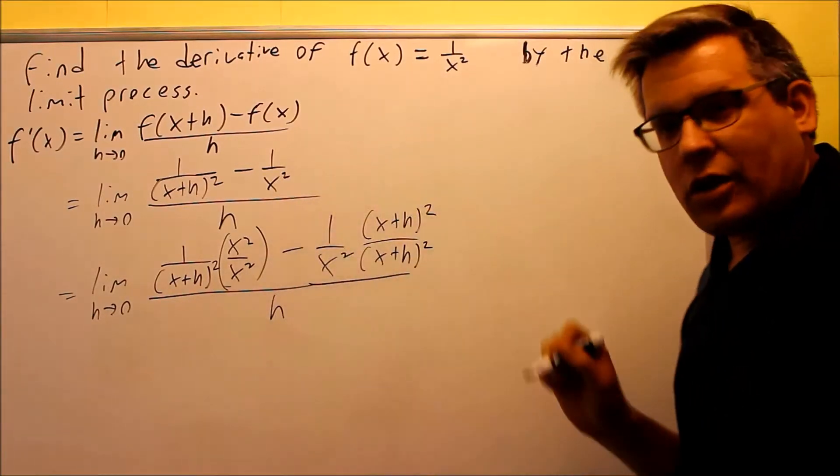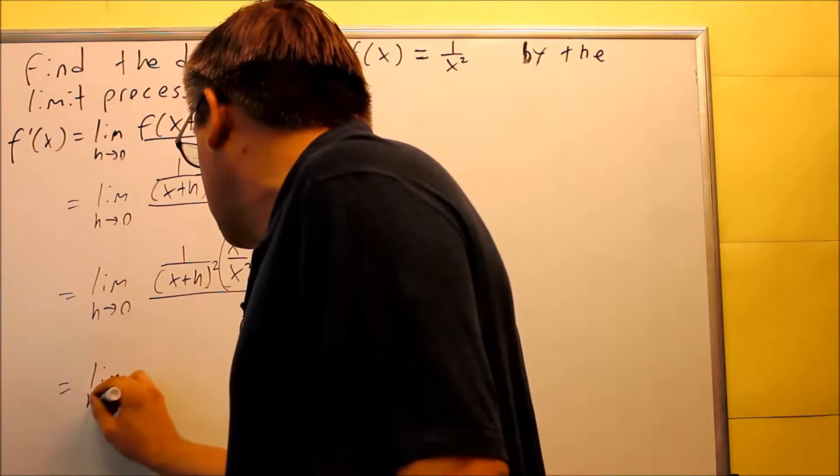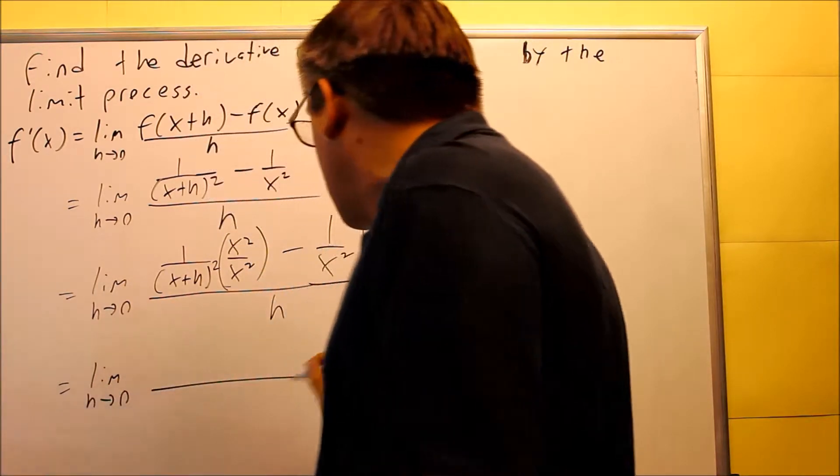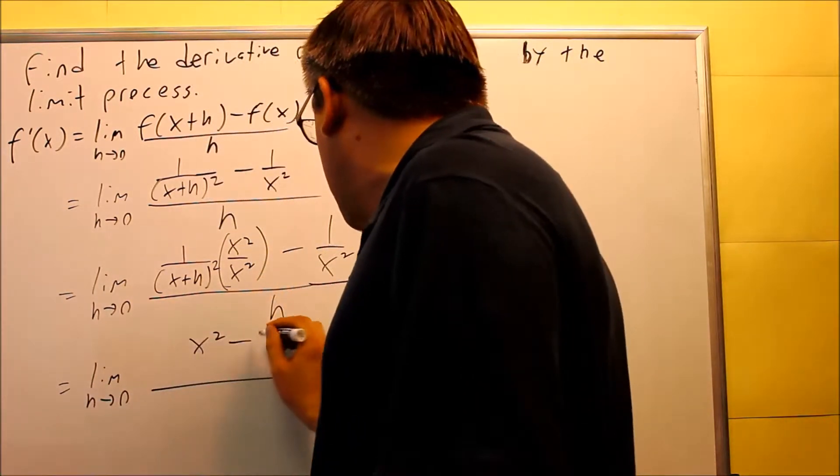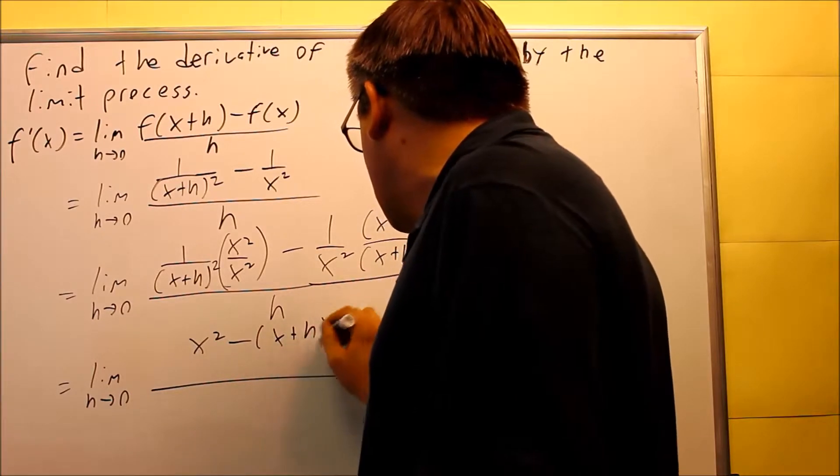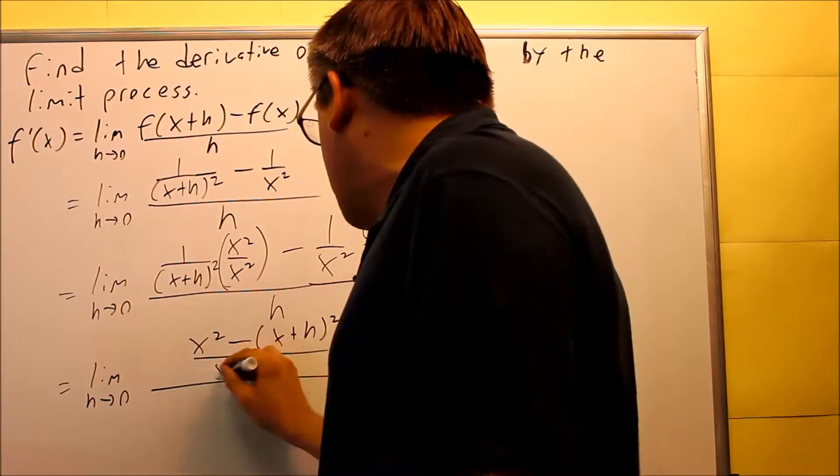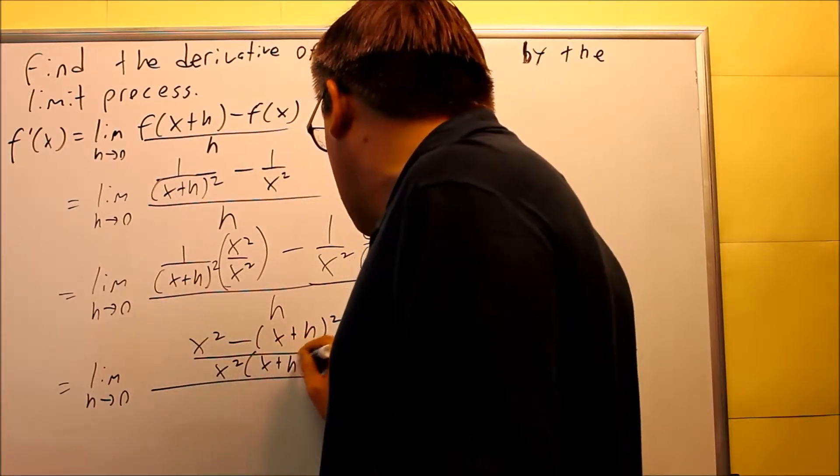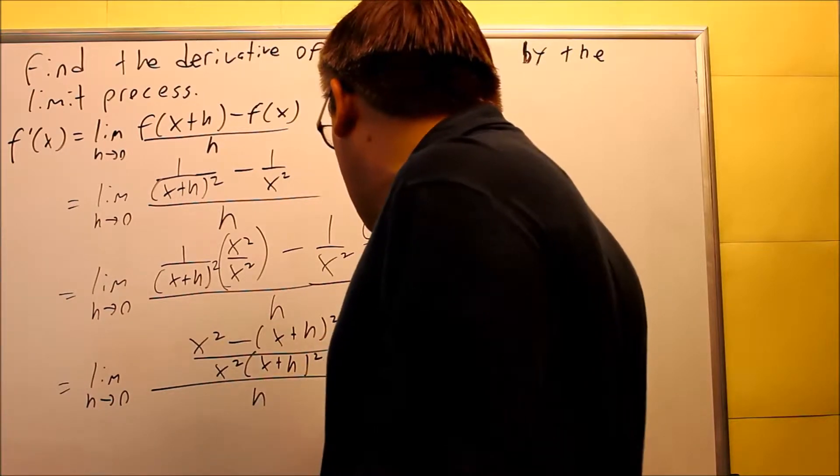We want to write this together as a single denominator. So that's going to be x squared minus (x+h) squared, and the bottom I have x squared times (x+h) squared, and I have h down below.